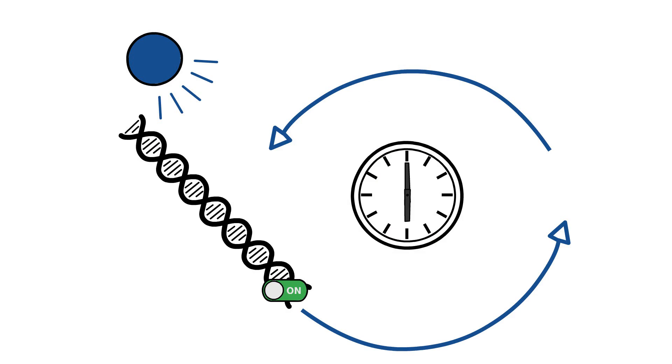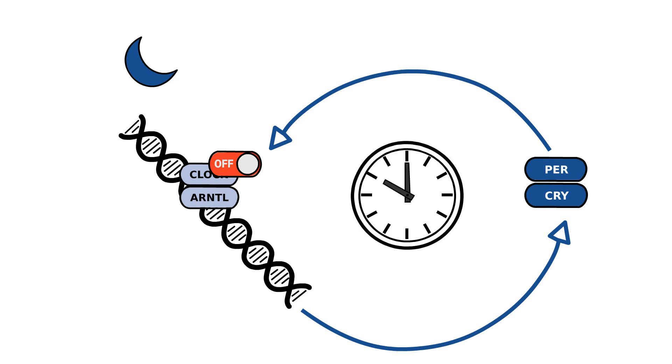With the help of certain clock genes like clock, bmal, per, and cry, our circadian rhythm regulates all clocks of our body and its organs.